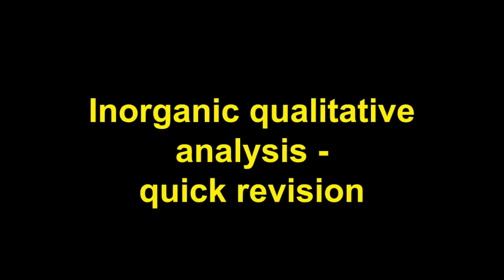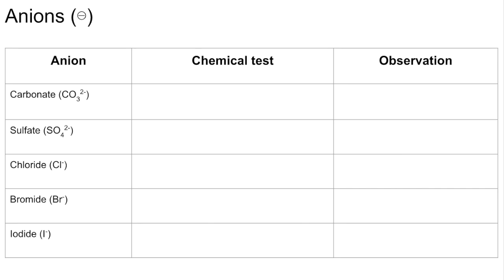Quick revision video on inorganic qualitative analysis. We'll start with the anions — there are five anions we need to know the tests for. I'm going to run through the chemical tests and the expected observations.